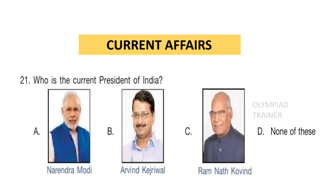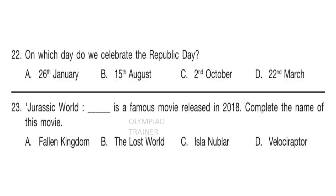The next section is Current Affairs. Question 21: Who is the current president of India? Answer is option C — Ramnath Kovind. Question 22: On which day do we celebrate Republic Day? Answer is option A — 26th January. Question 23: Jurassic World __ is a famous movie released in 2018. Complete the name of the movie. Answer is option A — Fallen Kingdom.